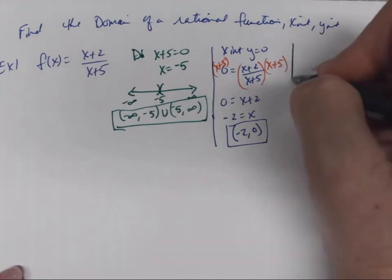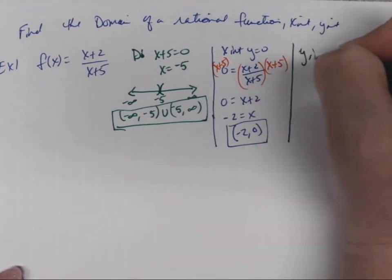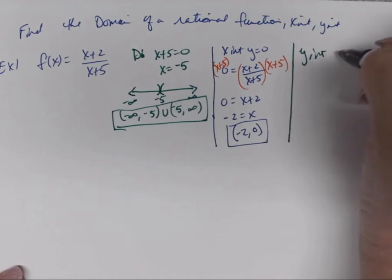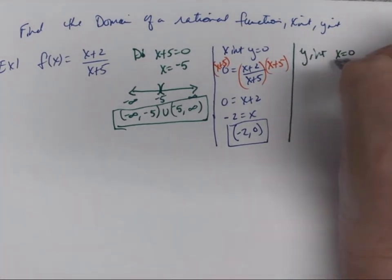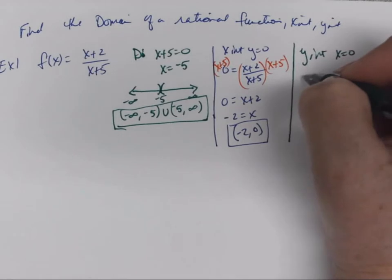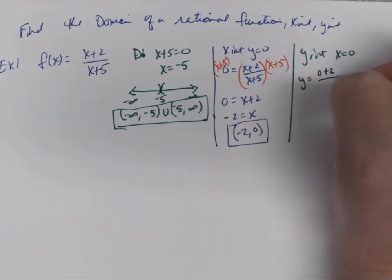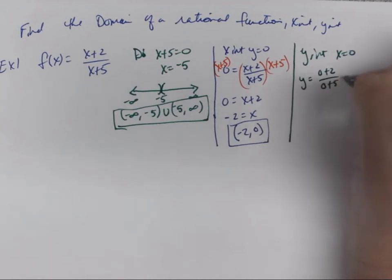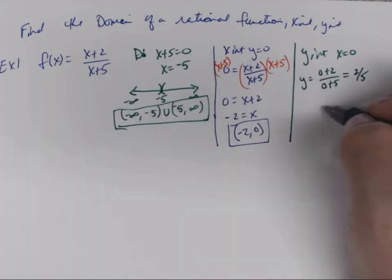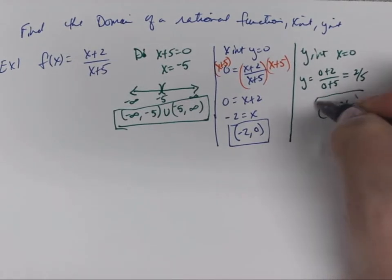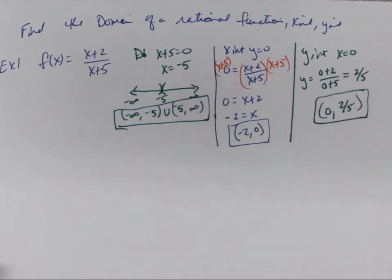Let's find the y-intercept. To find the y-intercept, we set x equal to 0. So y = (0+2)/(0+5), which equals 2/5. So the y-intercept is (0, 2/5). And those are the three parts we're looking for.